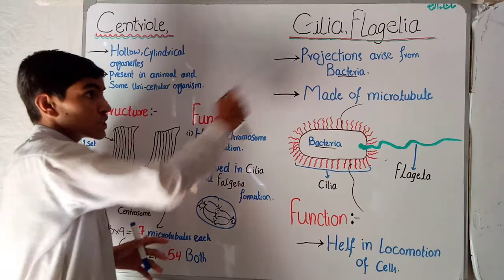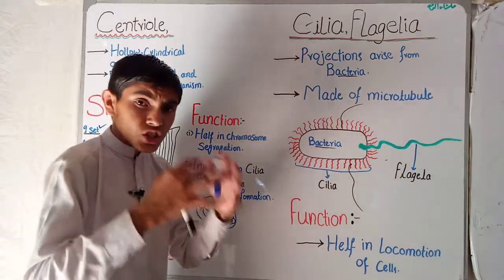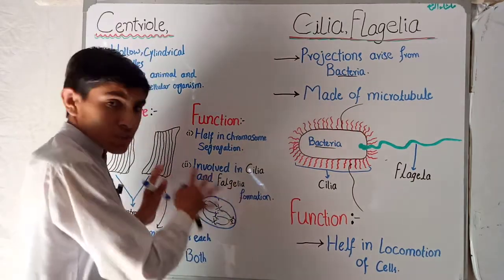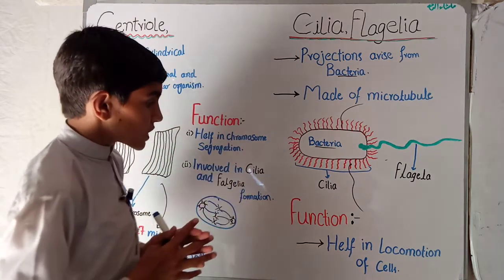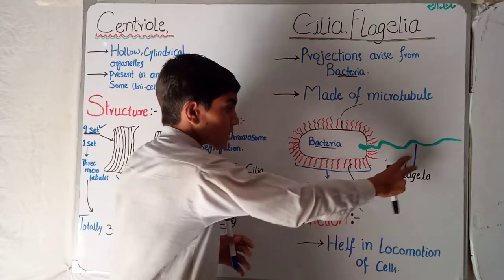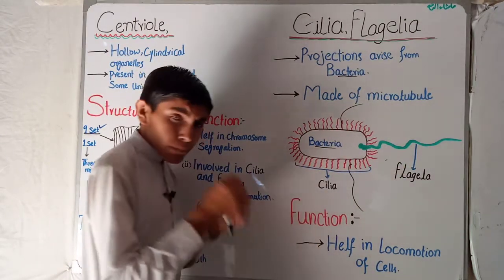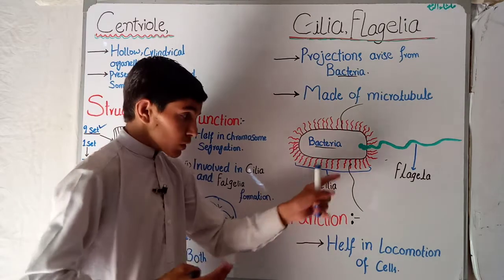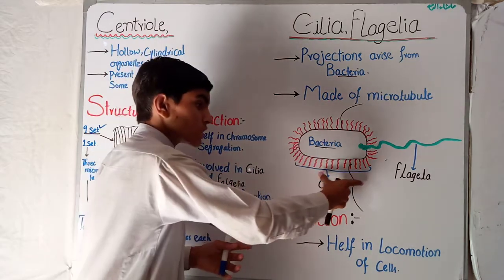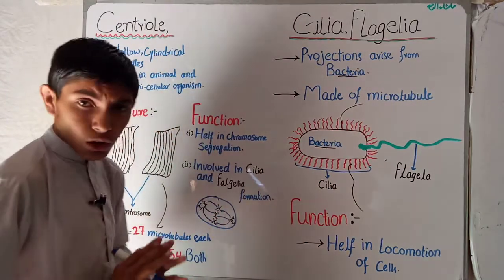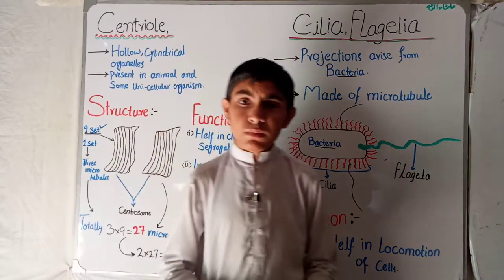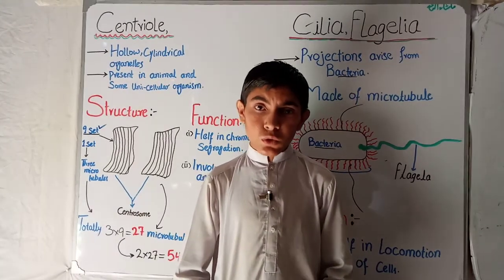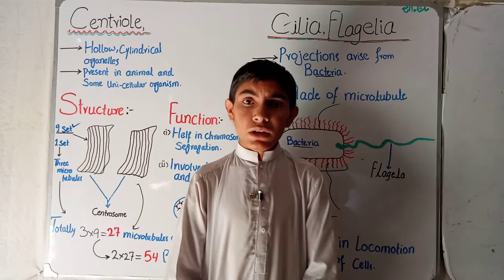Cilia and flagella are short and long projections arising from the bacterial cell, made of microtubules, and the centrioles help in their formation. The main function of flagella and cilia is the locomotion of the cell — when the bacterial cell moves, the flagella and cilia help in the movement. I hope this lecture is helpful. If you have any questions, mention them in the comments, and don't forget to subscribe, share, and like for upcoming lectures.